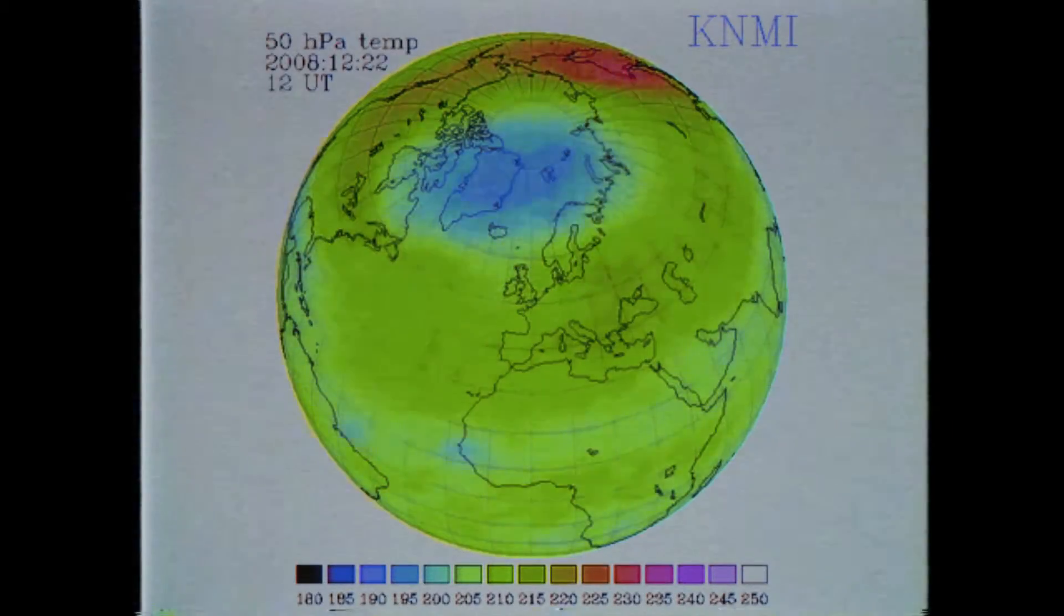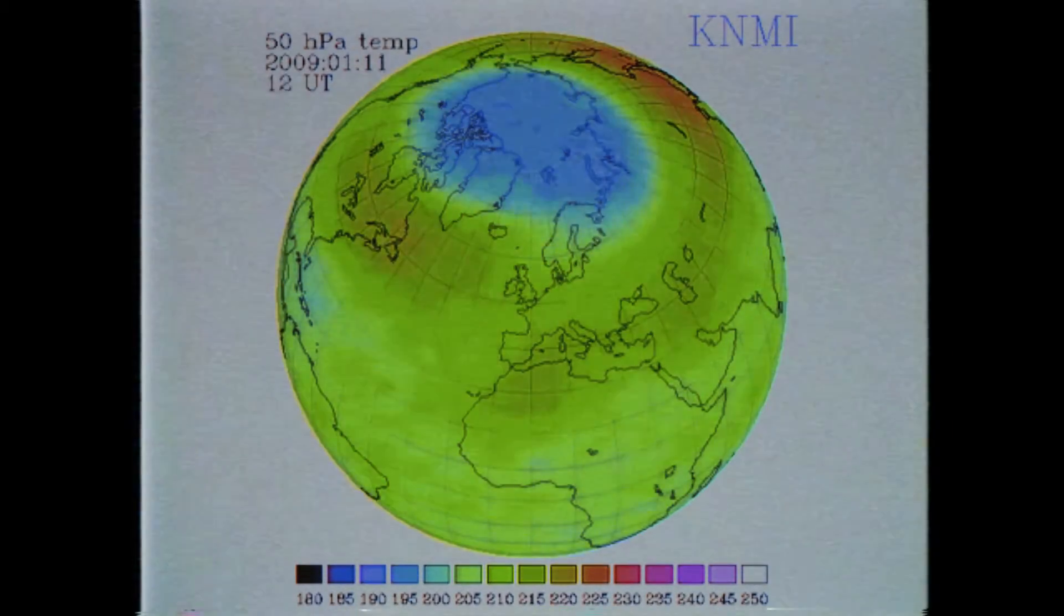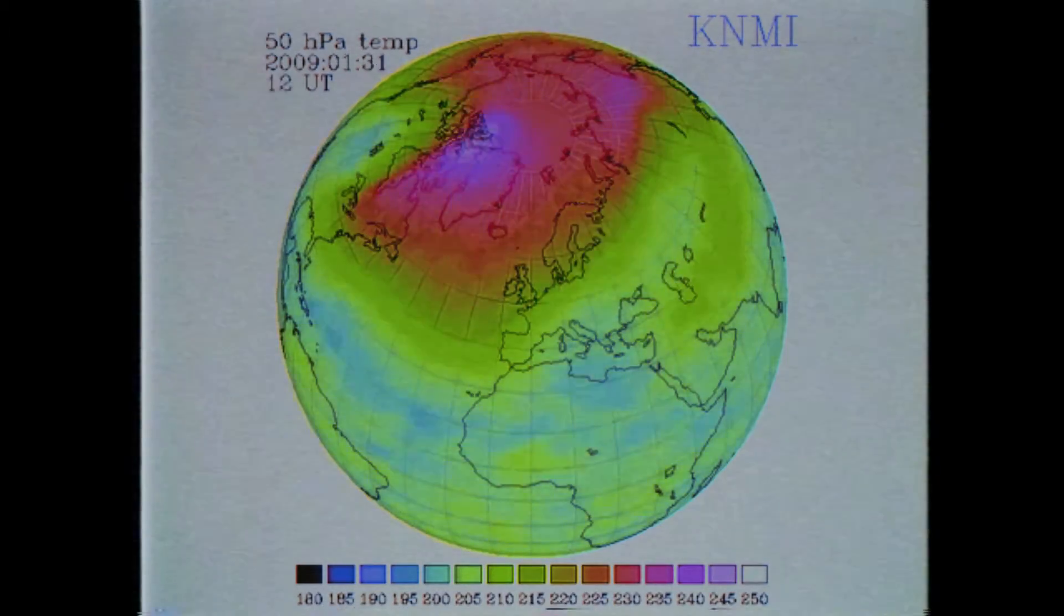The thing that triggers the weakening of the polar vortex is called a sudden stratospheric warming. This is when the very top level of the polar vortex warms tens of degrees Fahrenheit within a matter of a few days. This typically happens between five and ten times a decade.